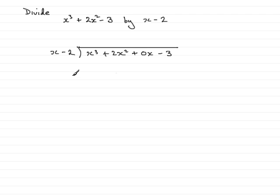Dividing in the usual way, what do you multiply x by to get x cubed? That's going to be x squared. x squared times x minus 2 gives x cubed minus 2x squared. Subtract to find the remainder. 2x squared minus minus 2x squared is 4x squared.